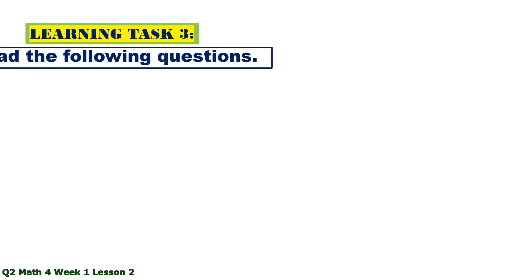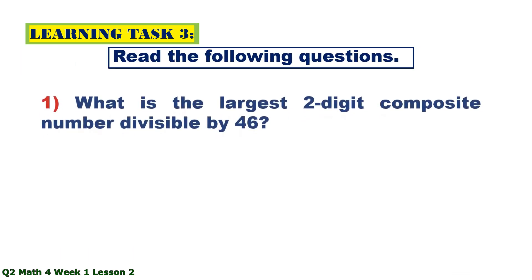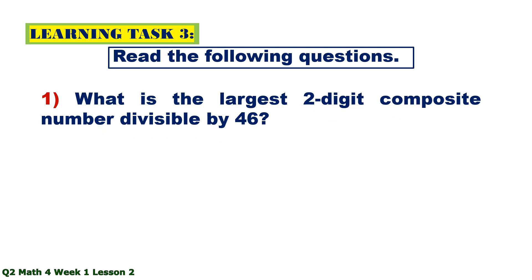Learning Task 3. Read the following questions. Number 1. What is the largest two-digit composite number divisible by 46? Using skip counting by 46, so the largest two-digit composite number divisible by 46 is 92.